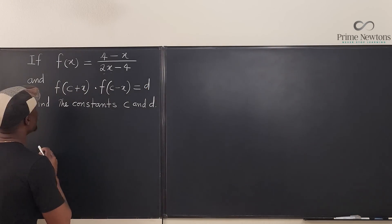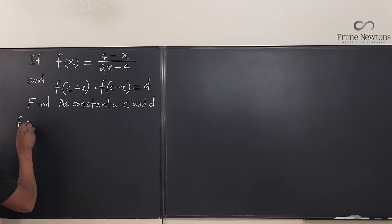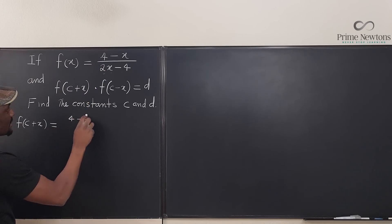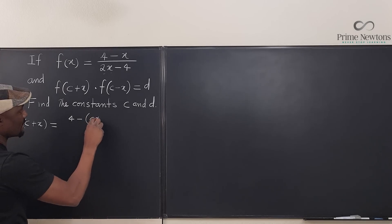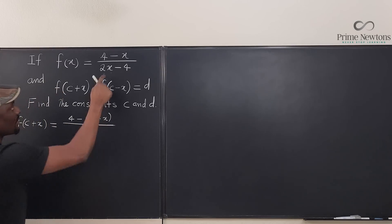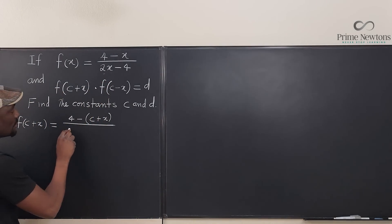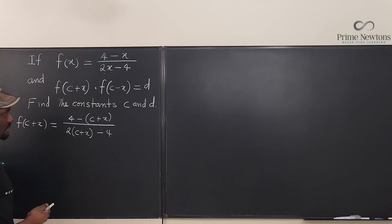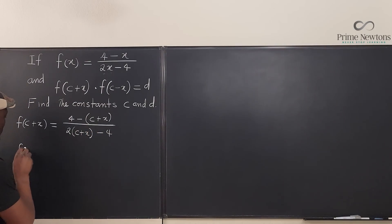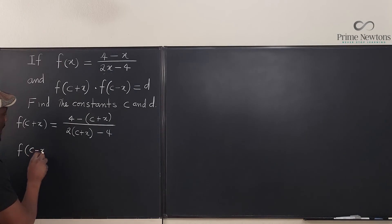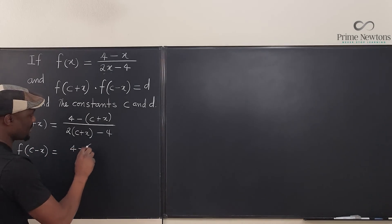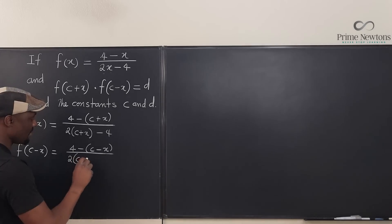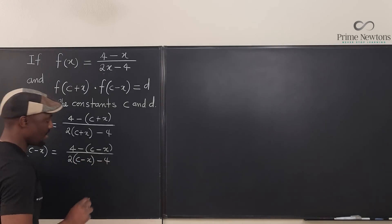So f(c plus x) becomes (4 minus (c plus x)) divided by (2 times (c plus x) minus 4). And f(c minus x) becomes (4 minus (c minus x)) divided by (2 times (c minus x) minus 4).